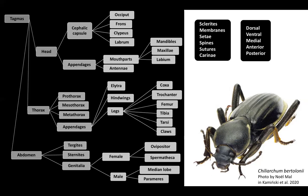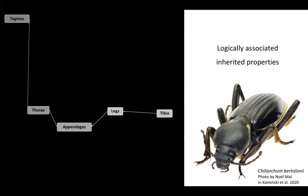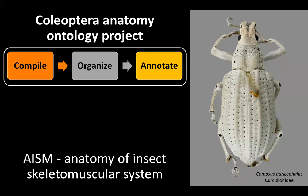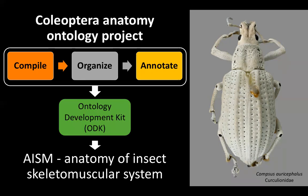Using this system, and because of how the relationships and hierarchies are set up, if we are talking about a beetle tibia, for example, a computer would be able to make assertions about it just based on its logically associated and hierarchically inherited properties. In order to produce this ontology, we are compiling, organizing, and annotating information about beetle anatomy, which we are then integrating into the framework of the ontology for the anatomy of the insect skeletal muscular system, or AISM, by using the ontology development kit, which is basically a package of software that automates several tasks, preventing errors, and making your data cleaner and fully interoperable with other ontologies.